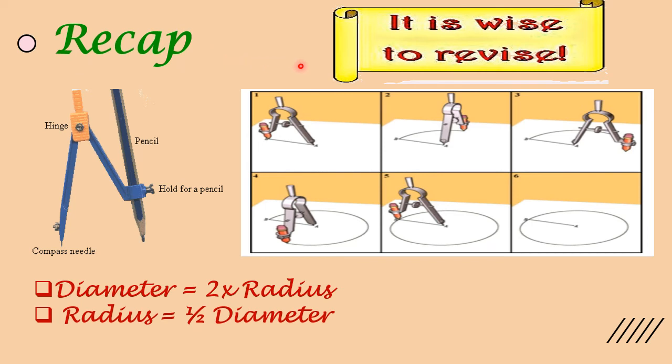Now let's quickly revise what we have done in today's class. We learned about different parts of compass like hinge, compass needle, and pencil hold. We learned that we place compass needle in the center and hold it firmly, then rotate the compass pencil arm in clockwise direction creating a circle with specific radius and center. We also learned that diameter is 2 times radius or radius is half of diameter.